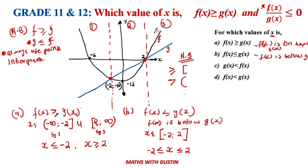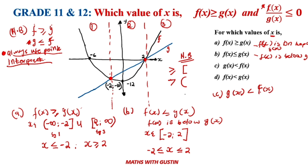If you don't understand, please leave a comment below. This is just case number one — we'll go to case two and case three. Remember: when checking which graph is greater or less than the other, always look at the point of intercept. Question C: g(x) < f(x). We are looking for where g(x) is below f(x).